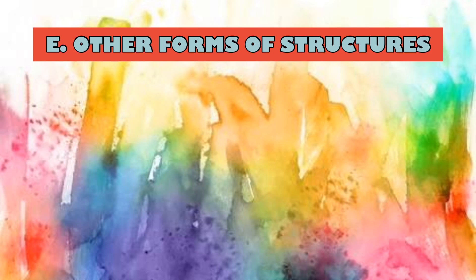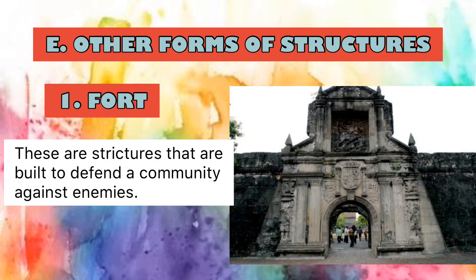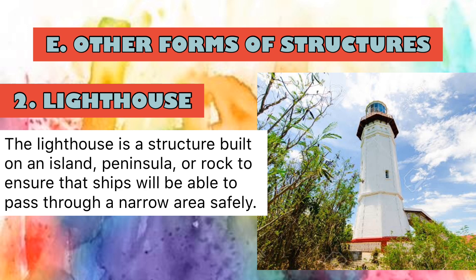Last, we have other forms and structures. First is the fort or cuta — structures built to defend a community against enemies. These are usually found in areas with natural barriers such as cliffs, hills, narrow passes, mountains, and waters. Second is the lighthouse or parola, a structure built on an island, peninsula, or rock to ensure that ships can pass through a narrow area safely. A good example is the Cape Bojeador lighthouse in Ilocos Norte.